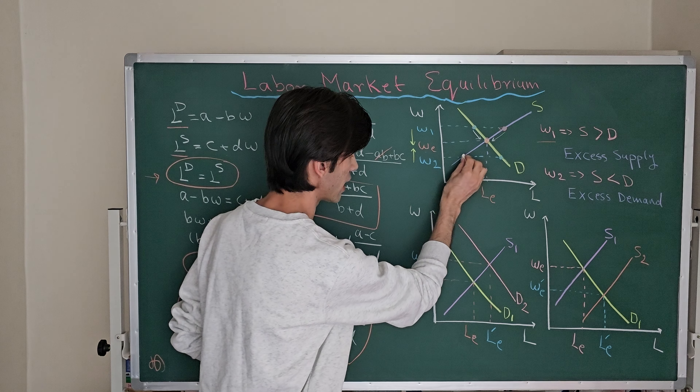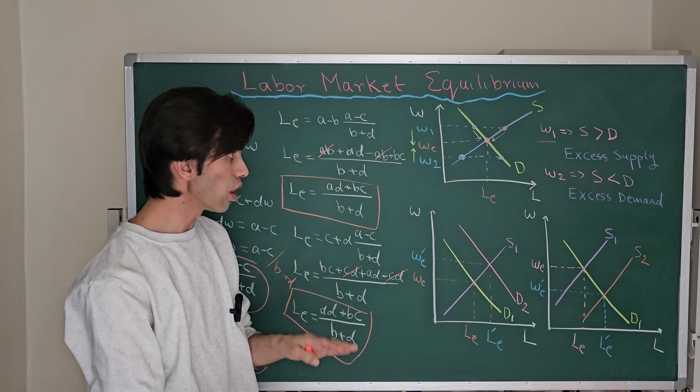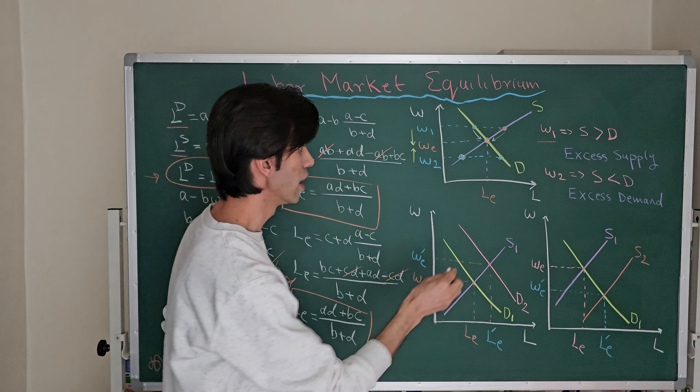When the wage rate is lower than the equilibrium wage — for example, at W_2 — demand is higher than supply, creating excess demand. More employers want to hire employees, but fewer workers are willing to enter the labor market at this low wage rate. Firms wanting to hire will offer higher wages to attract qualified labor, moving along the demand curve. As wages rise, some employers exit the market because they are unwilling to hire at higher wage rates.